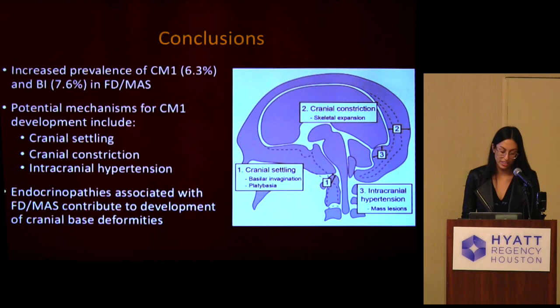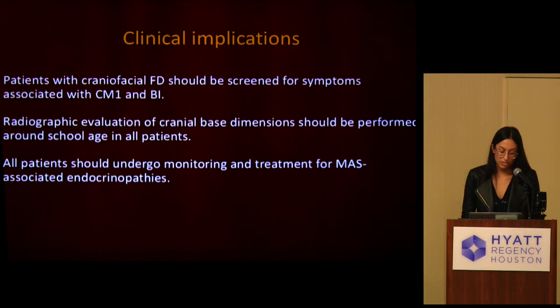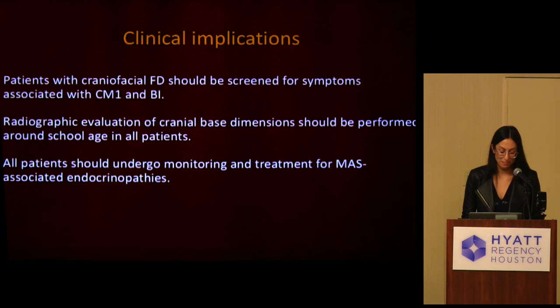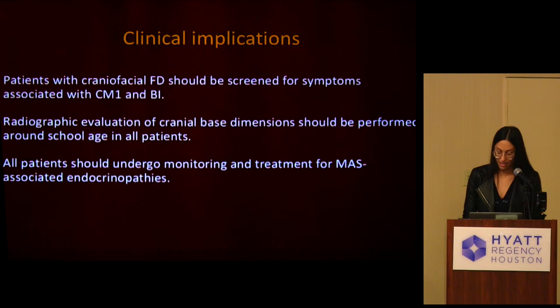In conclusion, there is an increased prevalence of Chiari malformation and basilar invagination in fibrous dysplasia and McCune-Albright syndrome. Potential mechanisms for developing a Chiari include cranial settling, cranial constriction, and intracranial hypertension. Endocrinopathies associated with FD/MAS contribute to the development of these deformities. Clinically, patients who have cranial FD should be screened for these conditions — consensus guidelines were recently finalized at the American Society of Bone and Mineral Research meeting. All patients should receive a radiographic evaluation of the cranial base dimensions and undergo monitoring and aggressive treatment for their associated endocrinopathies.